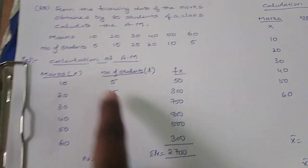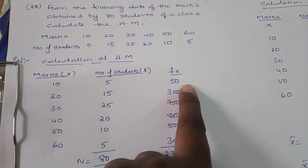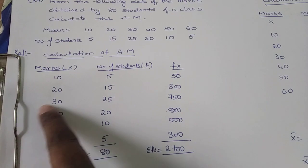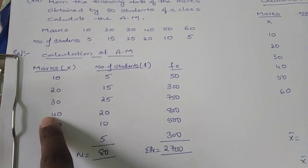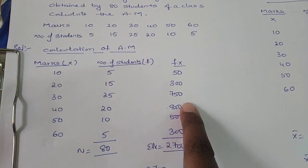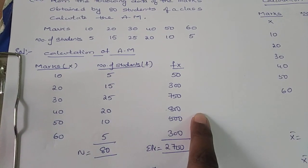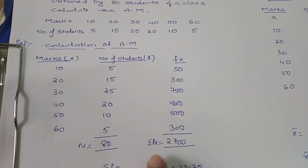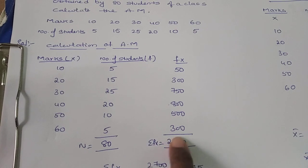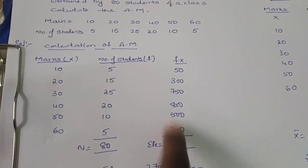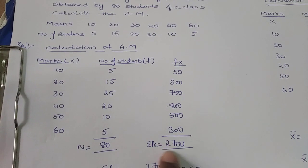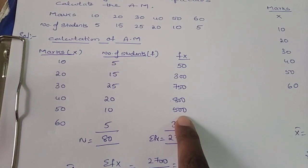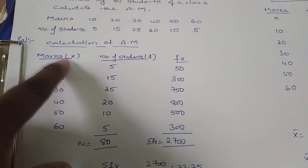Now calculate fx by multiplying x into f: 10×5 = 50, 20×15 = 300, 30×25 = 750, 40×20 = 800, 50×10 = 500, 60×5 = 300. Adding these up gives σfx = 2700.